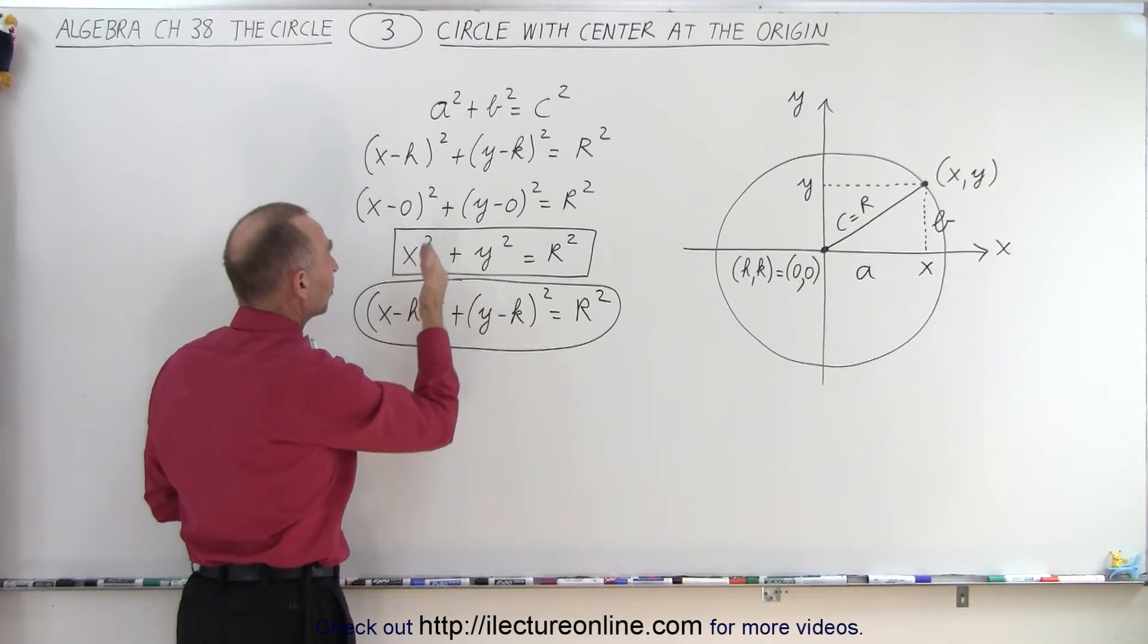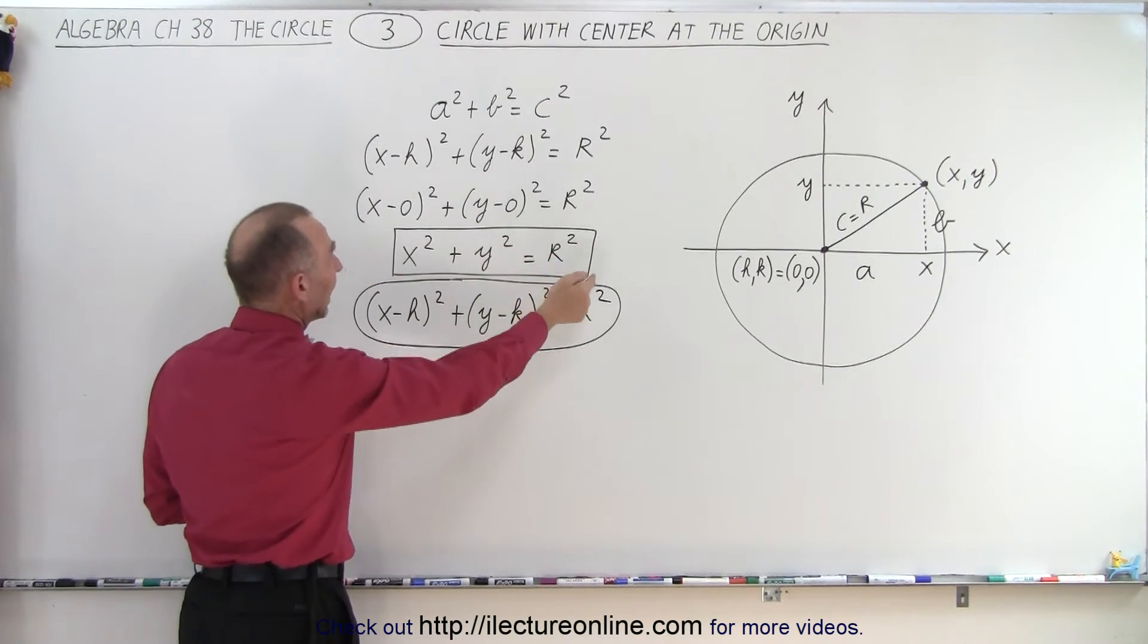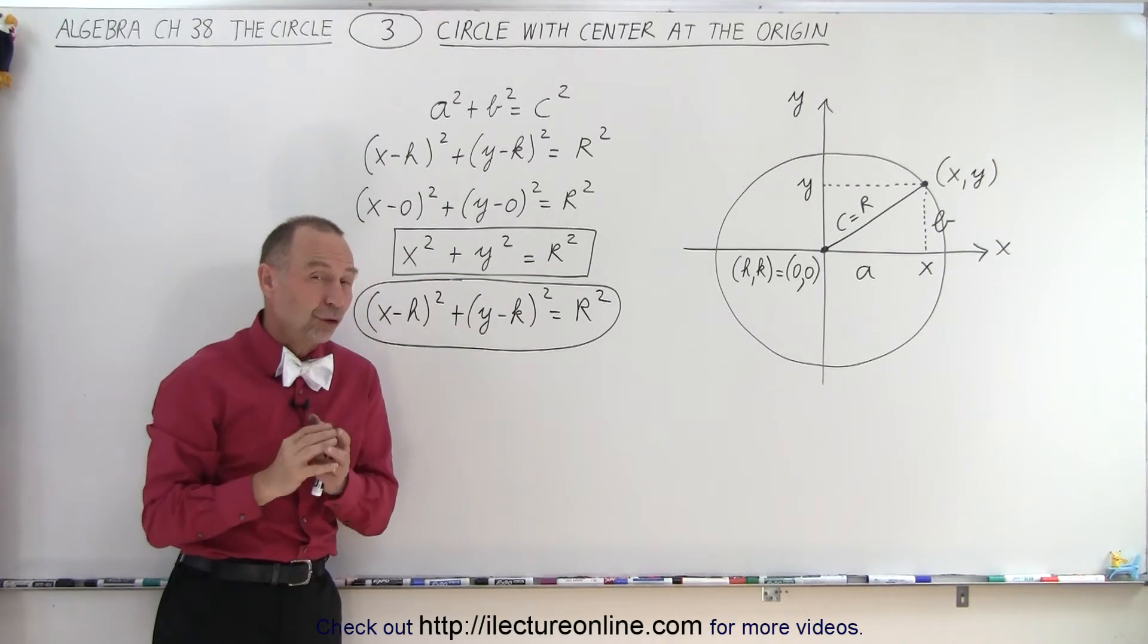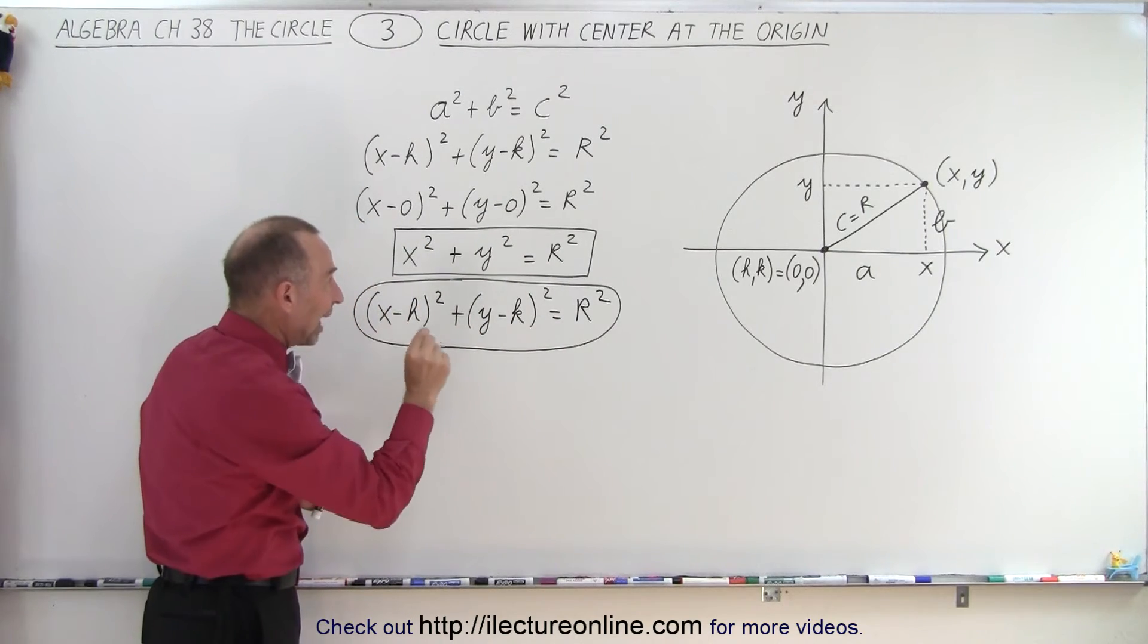And so we get x squared plus y squared equals r squared, and that is therefore the equation of a circle with the center at the origin.